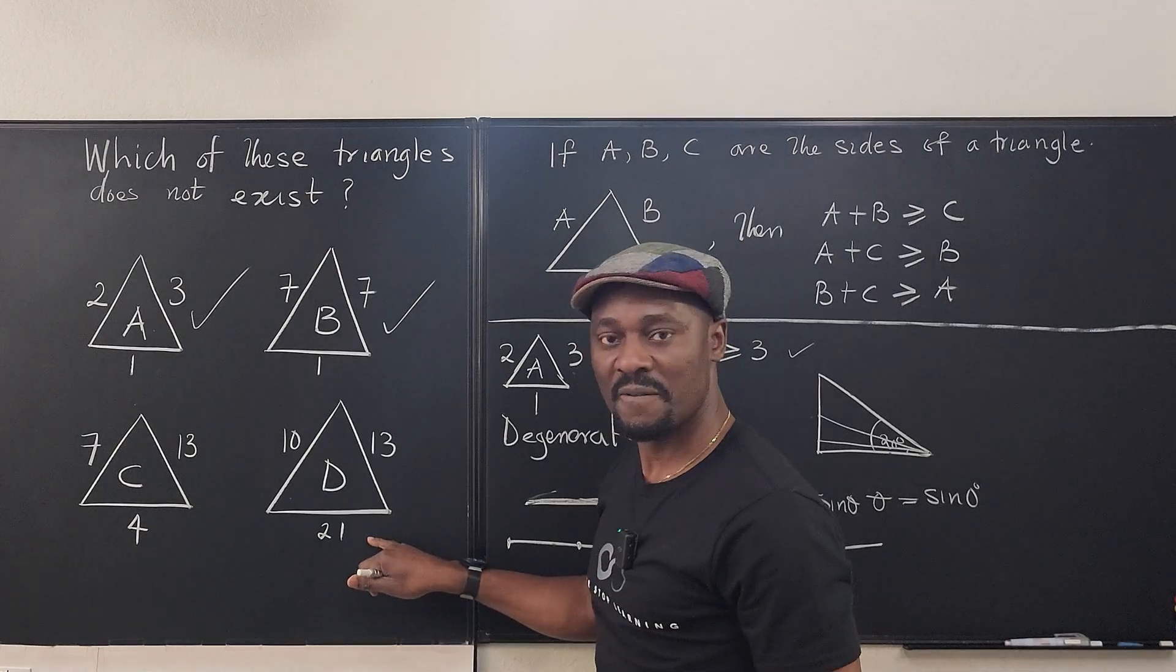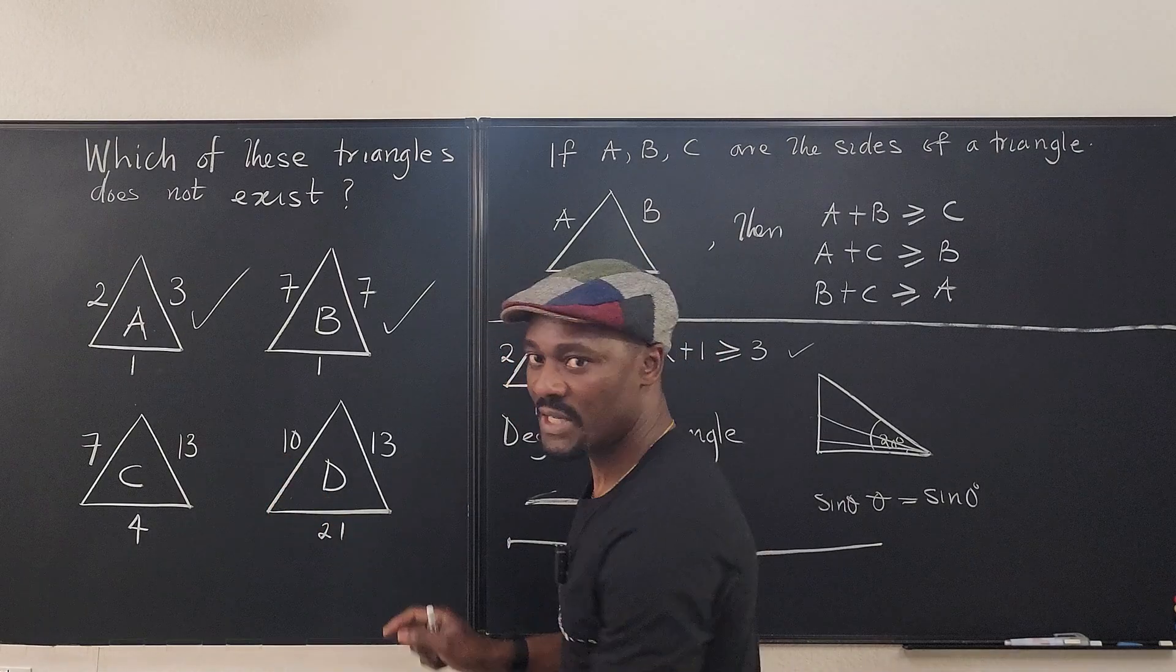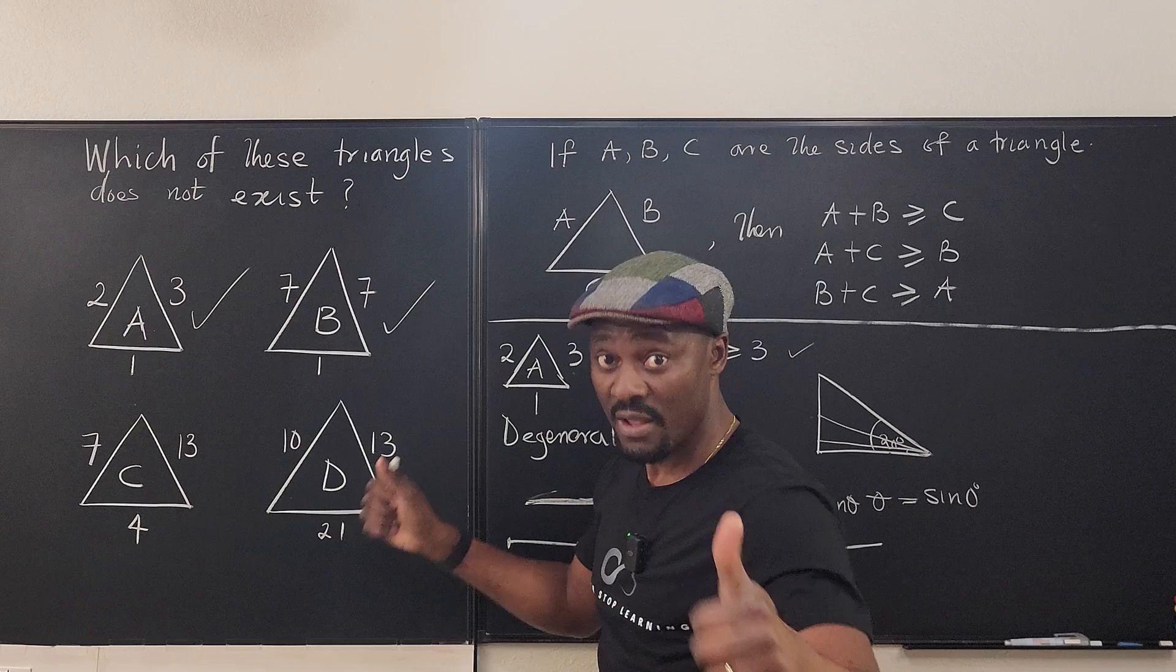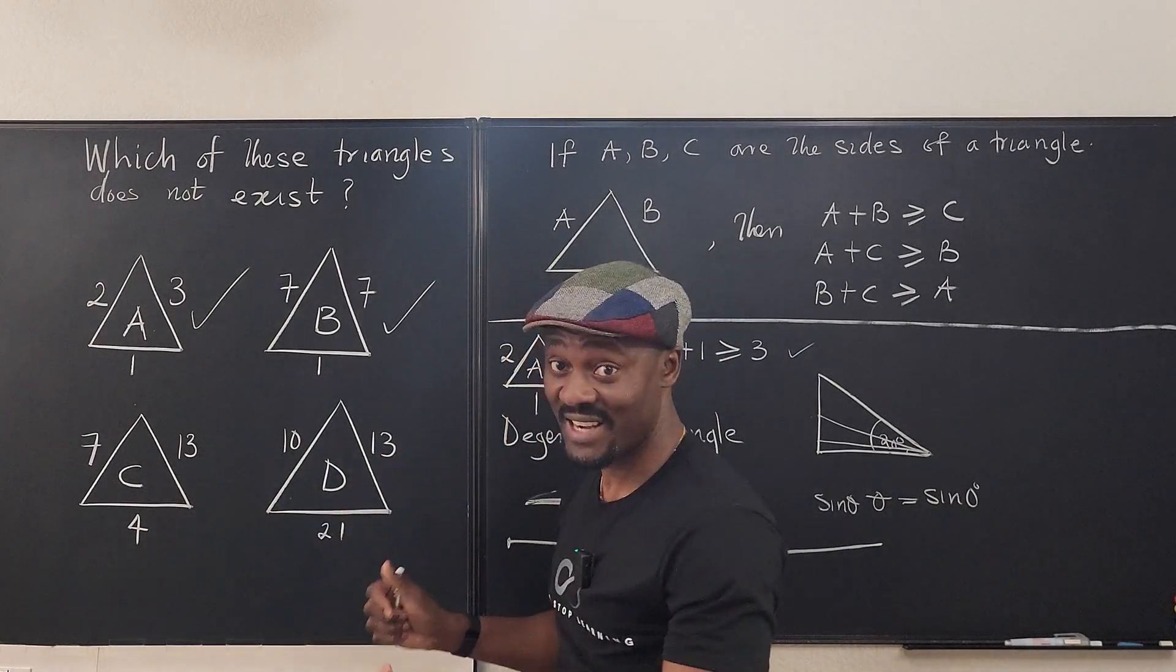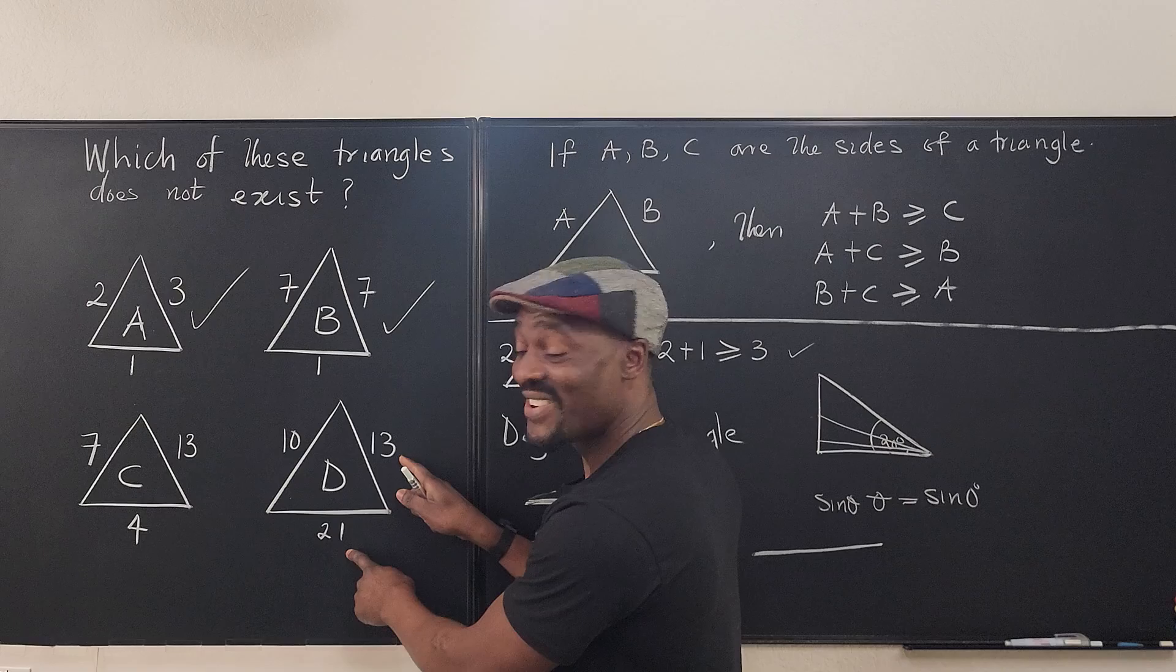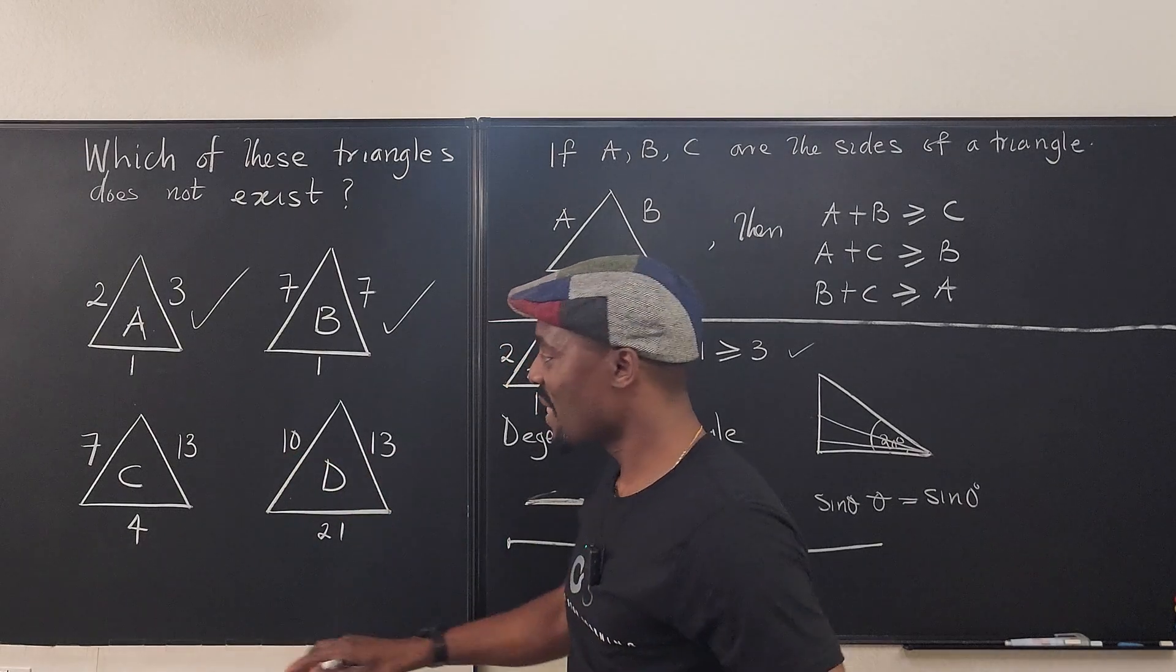Let's go to this one. If you add 10 and 13, you get 23. It is greater than 21. Nice. 21 plus 10 is greater than 13. That's nice. 13 plus 21 is greater than 10. That's nice.